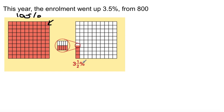Now we have something here. If you break this down, the question is, the enrollment went up 3.5%. Well, how much is that?